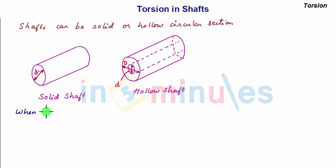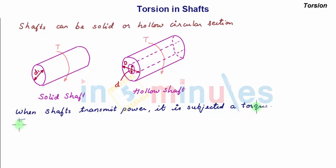When shafts transmit power, it is subjected to a torque. Torque is denoted by T and its unit is Newton meter.